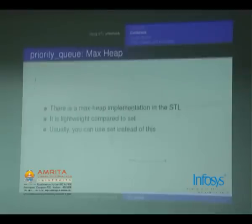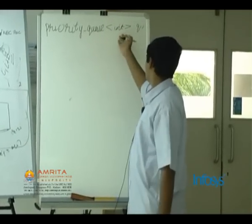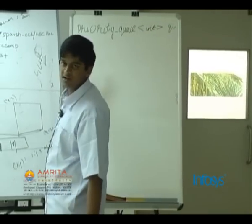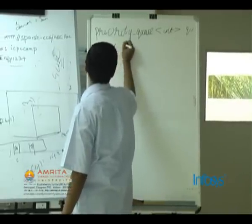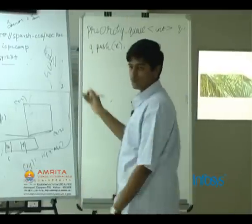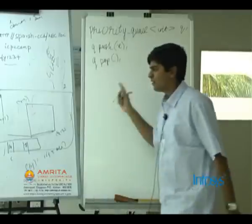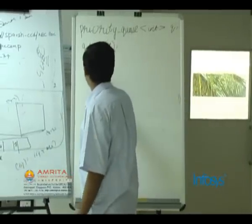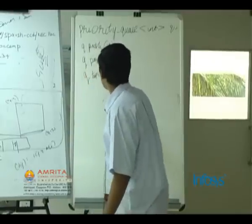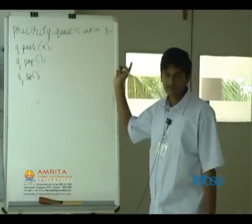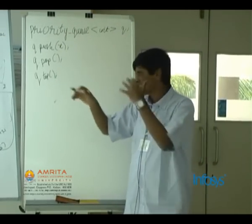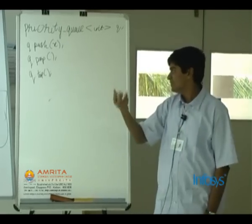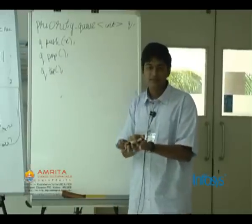Syntax for priority queue: priority_queue<int> q — this is by default a max-heap. q.push(x) inserts x into the priority queue. q.pop() performs extract-max (removes the maximum). q.top() returns the maximum element without removing it.